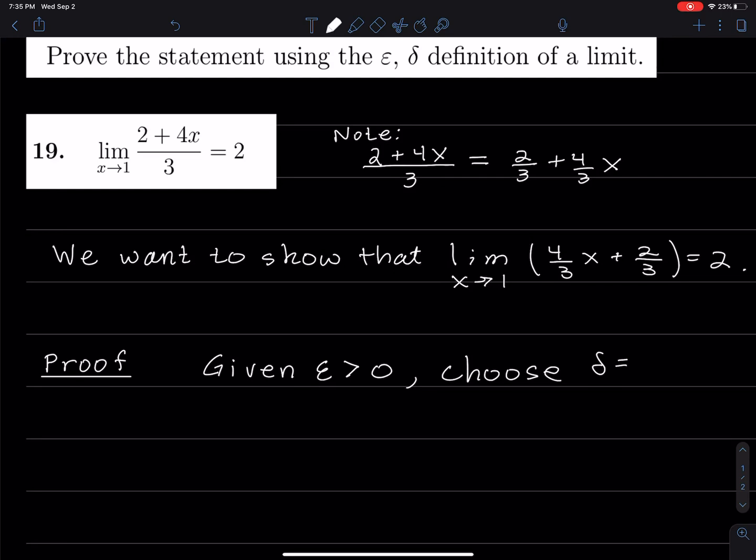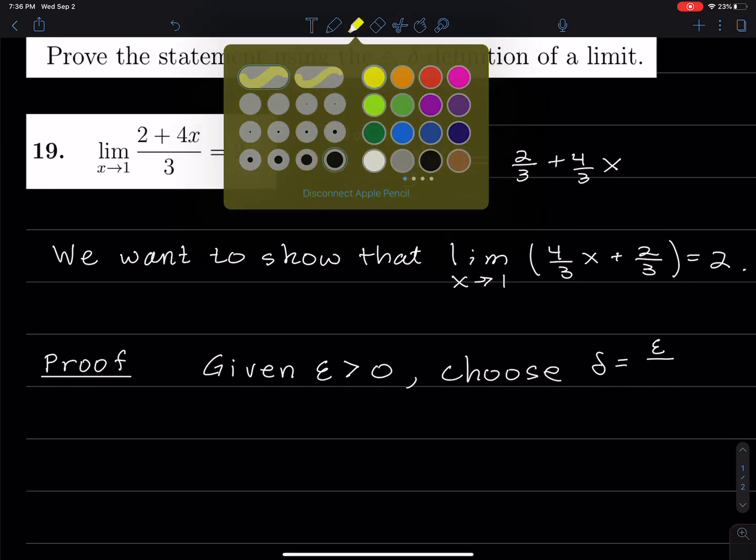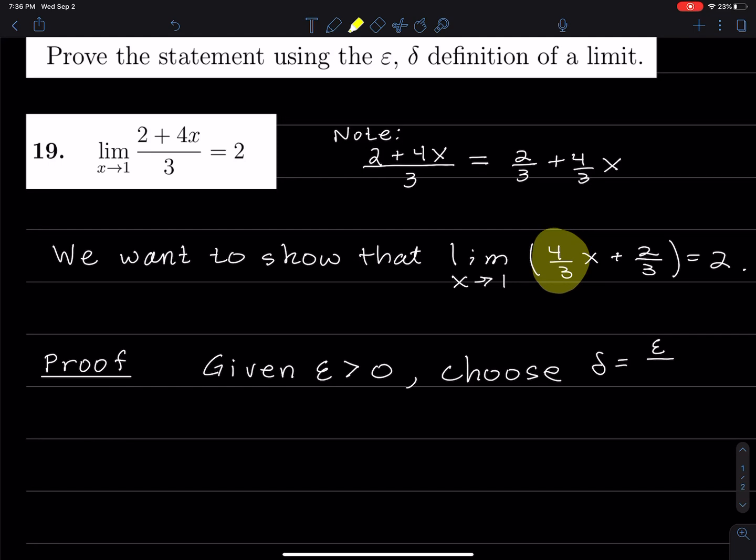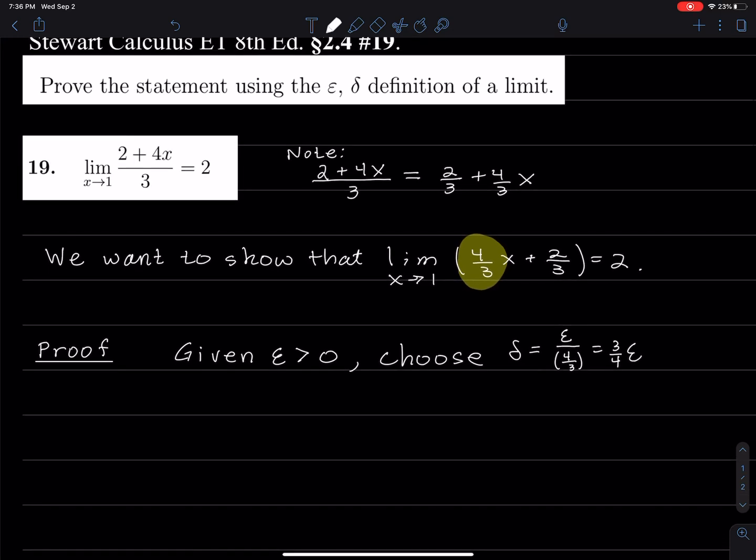Well, this function is a line. And so if you have the function as a line, how do you find delta? What you do is you take epsilon, and you divide by the coefficient of x. So you divide by 4/3, which in fact gives (3/4)ε. And we'll see why that does the trick.